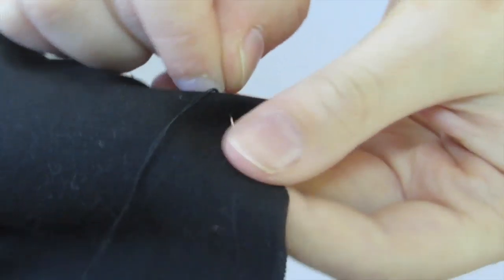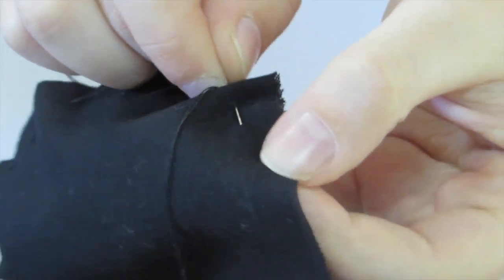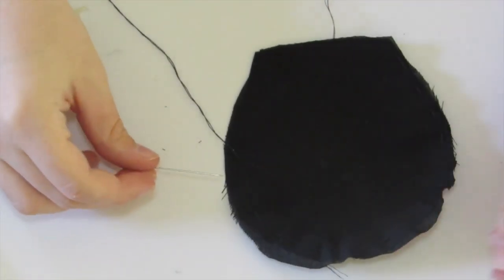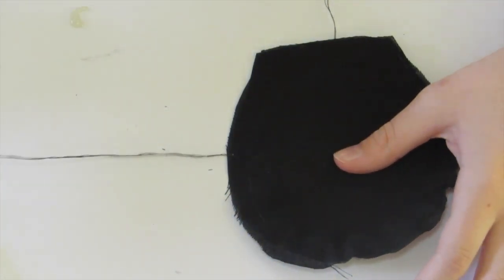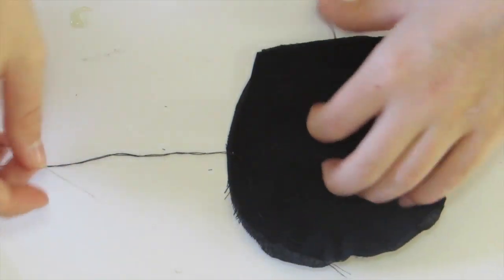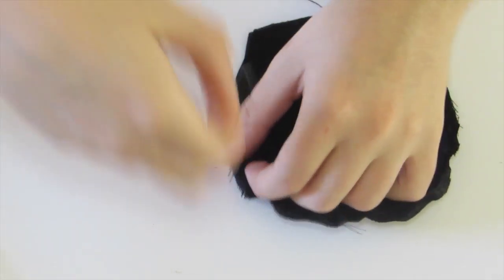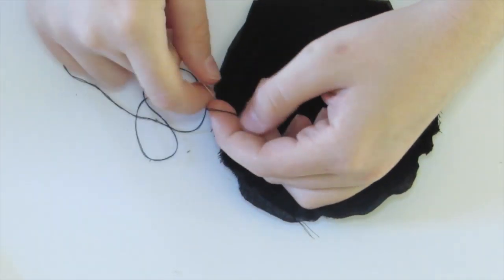Taking a closer look you can see I'm just going in and out and weaving through and then pulling it through. Now that we're about three-fourths of the way around the circle, go ahead and finish it off by tying a knot and cutting off the excess.